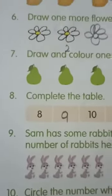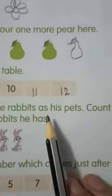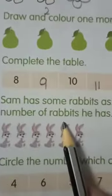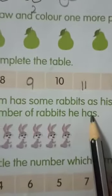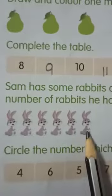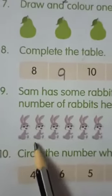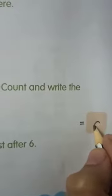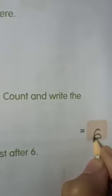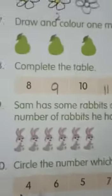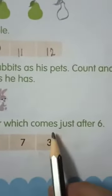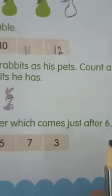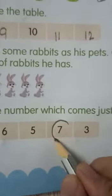And the ninth question we have, Sam has some rabbits as his pets. Count and write the number of rabbits he has. Now, we have to count these rabbits and we have to write the number. 1, 2, 3, 4, 5, 6. Sam has 6 rabbits. The next question is, circle the number which comes just after 6. What comes after 6? 7. Circle the number 7.